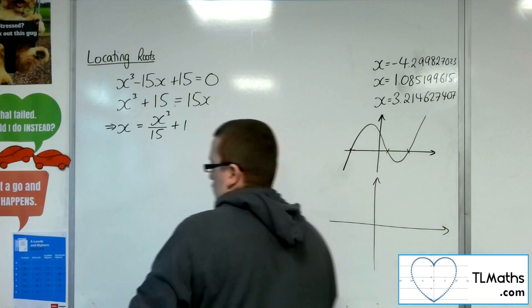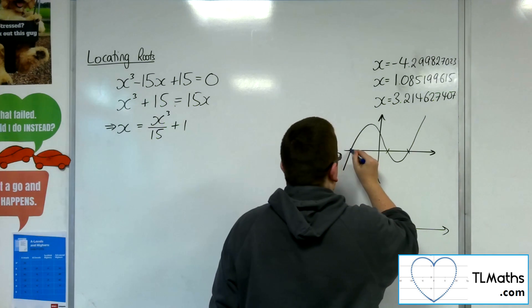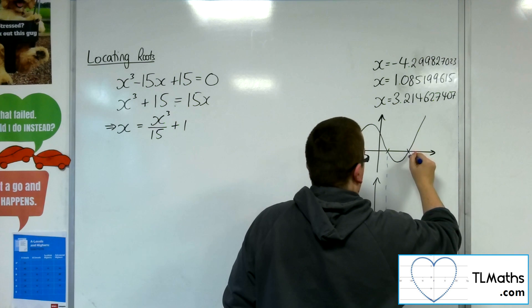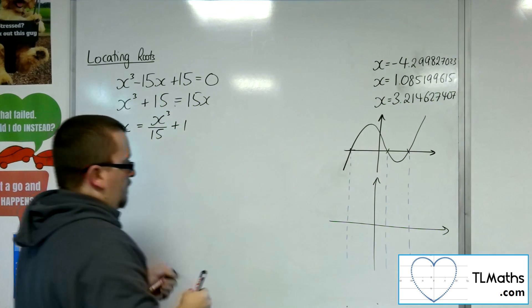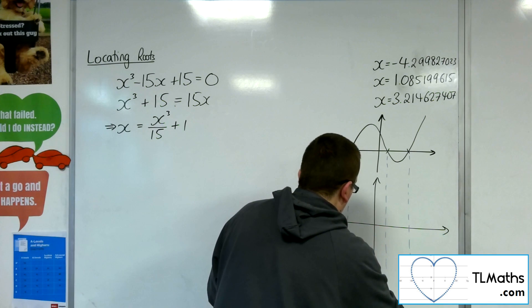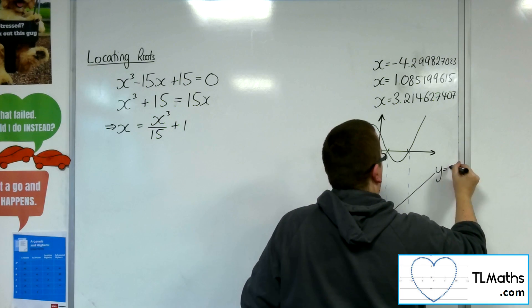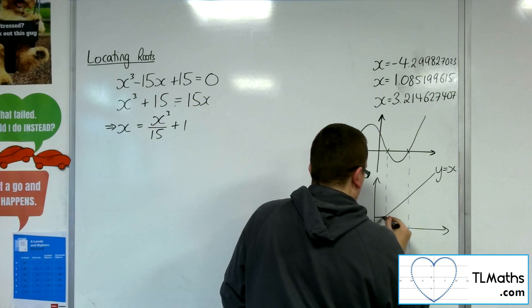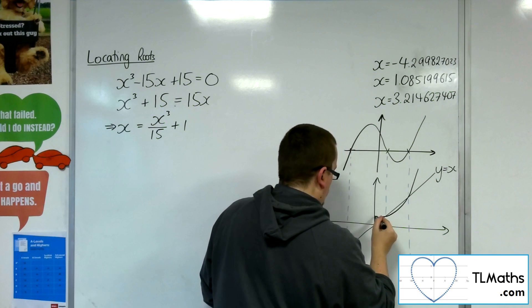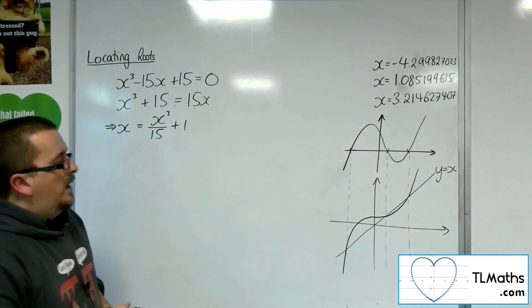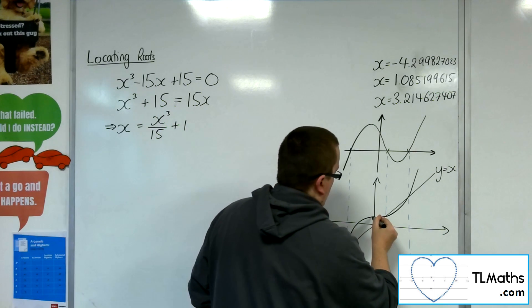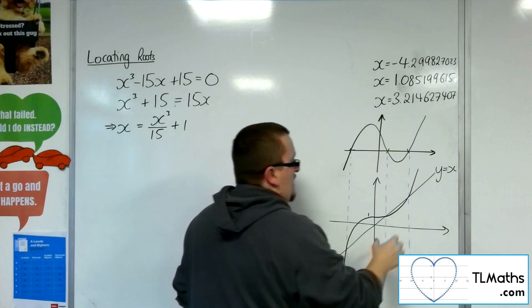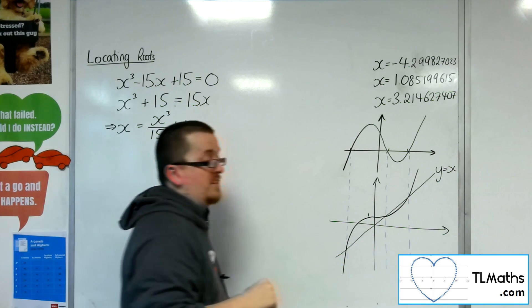So whereas this equation is the same as asking where y equals this cubic equals 0 — where does it cross the x-axis — it's the same as asking where does the line y equals x intersect the curve y equals x cubed over 15, plus 1? If I draw that situation, there's y equals x and there's my curve of y equals x cubed over 15 plus 1, going through 1.